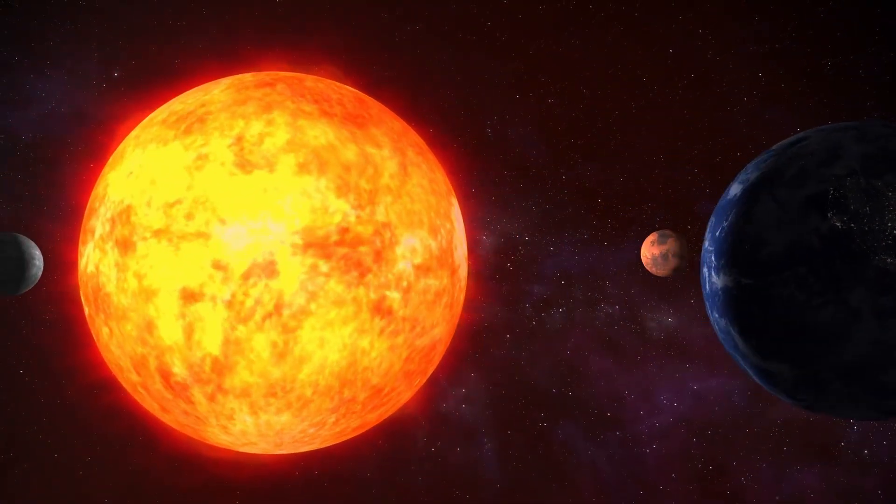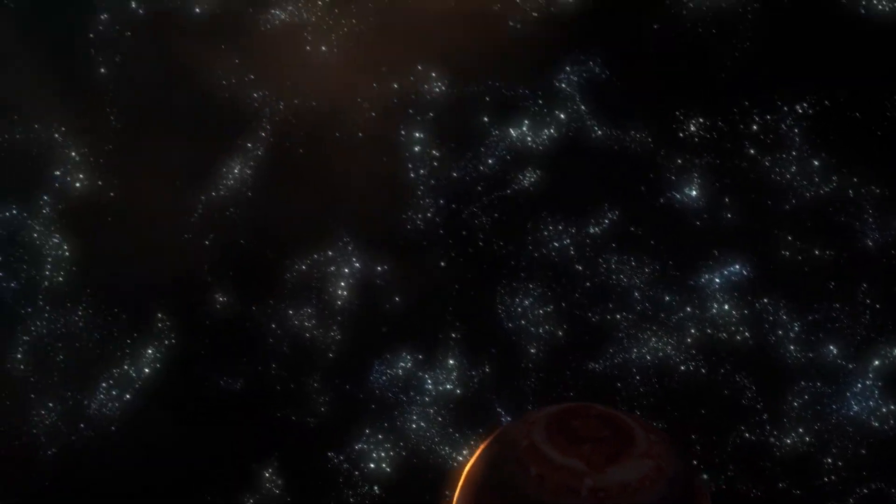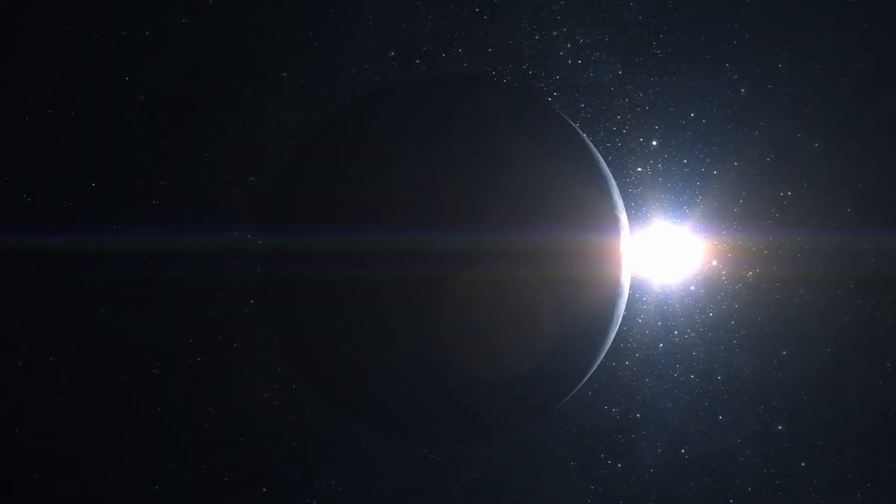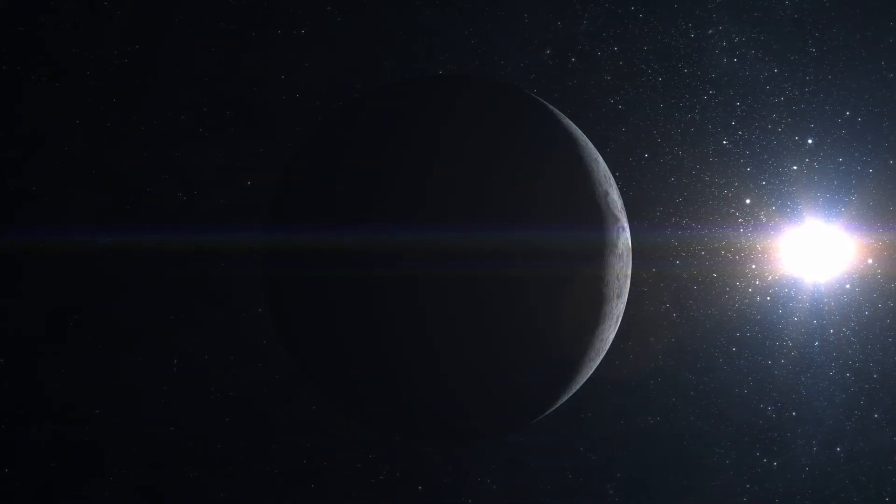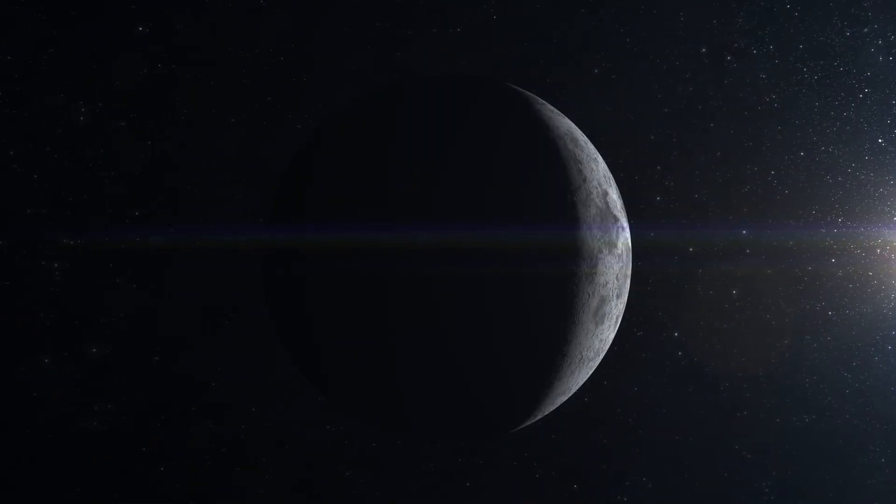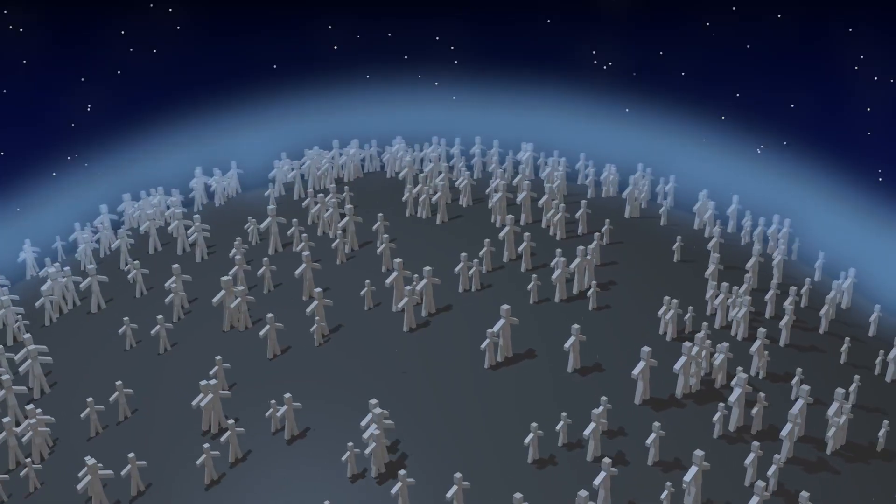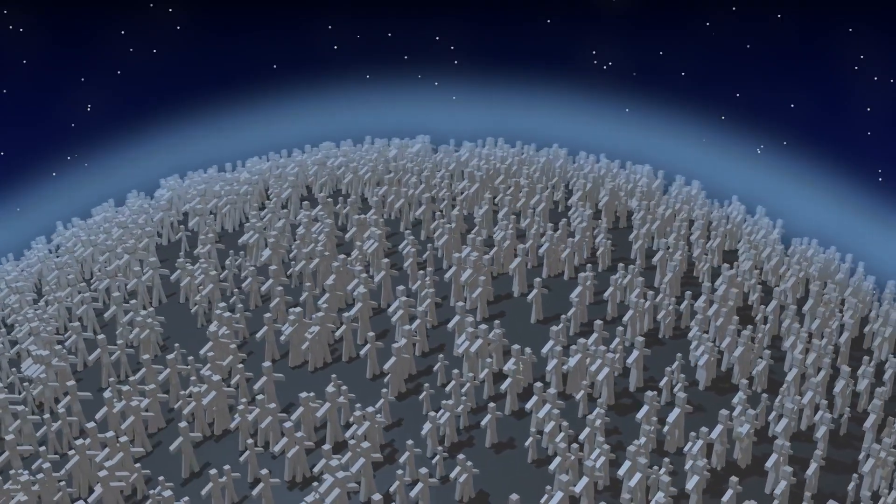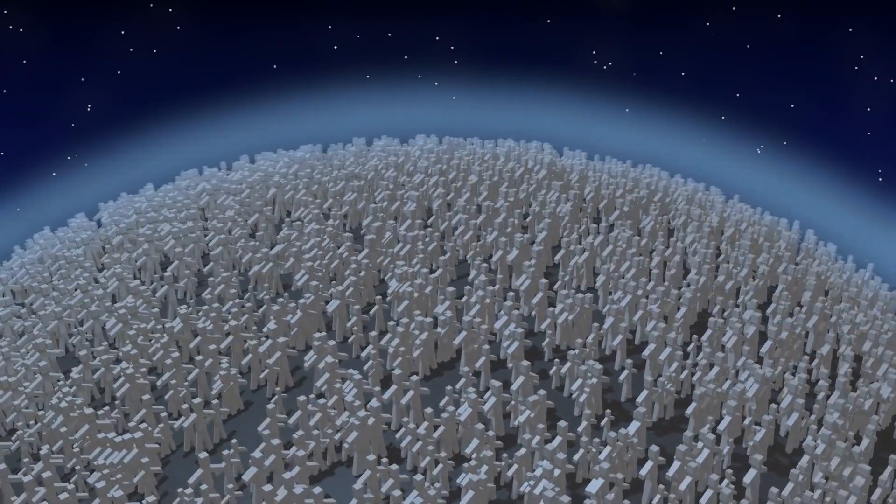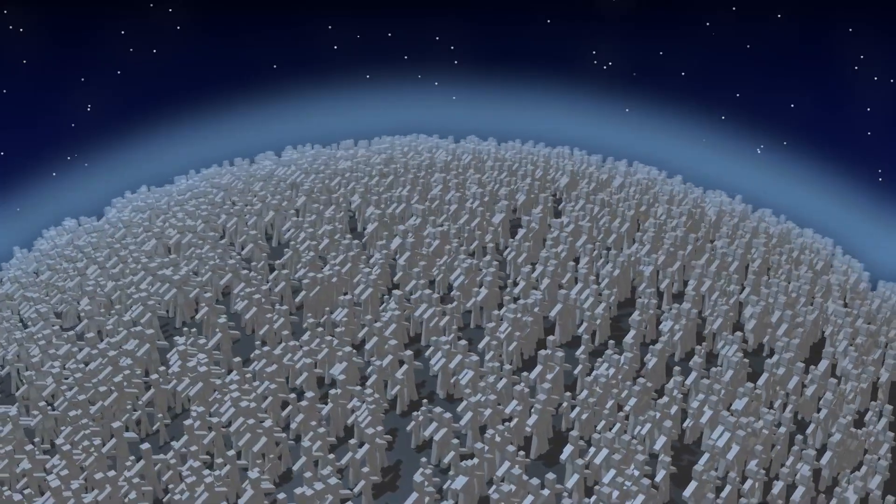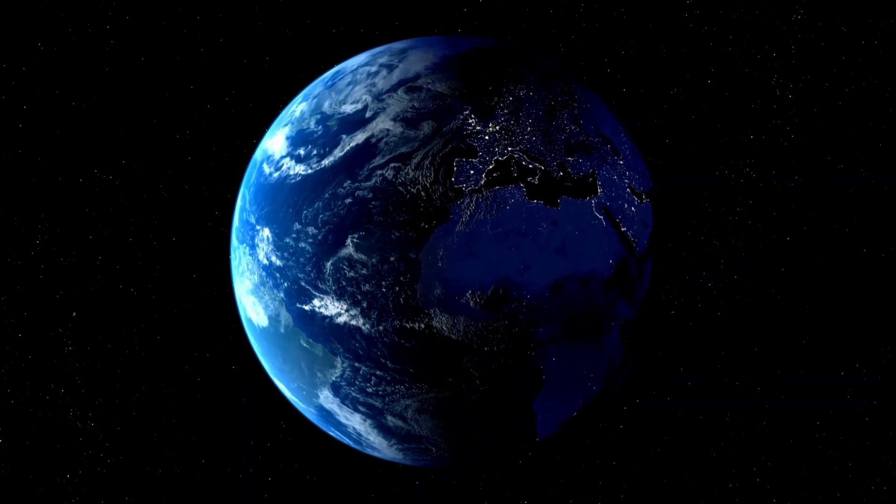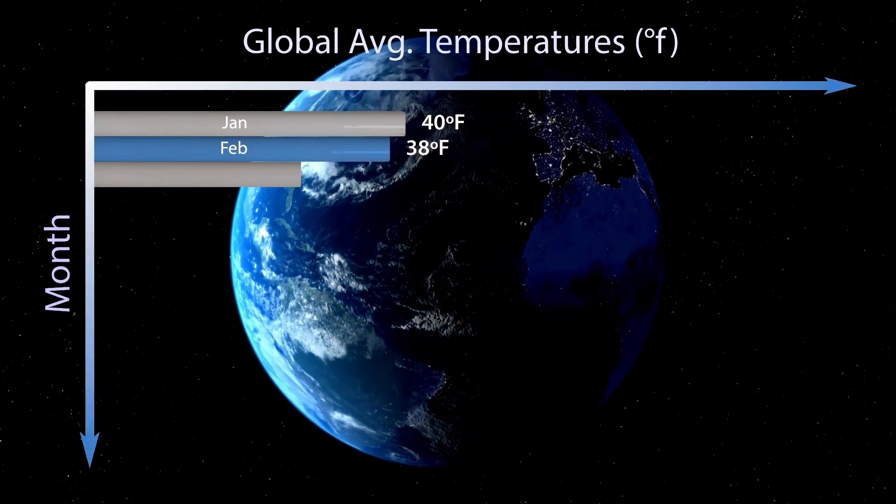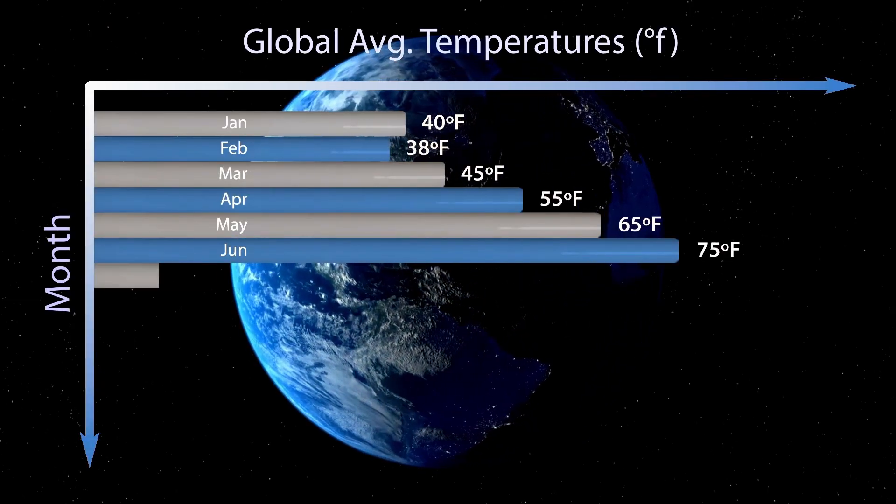Proxima Centauri b revolves around the red dwarf Proxima Centauri. The closest star system to our solar system is made up of Rigel Centauri (also known as Alpha Centauri A), Toliman (sometimes known as Centauri B), and Proxima Centauri (also known as Centauri C). The third brightest stars in our night sky, Rigel Centauri and Toliman, make up the binary Alpha Centauri AB. Scottish astronomer Robert Innes discovered it in 1915, making it the star closest to Earth.